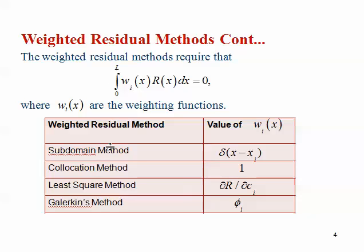The value of the weight function depends on the method used. In the subdomain method, you use the Dirac delta function at x = x_i. In the collocation method, the weight is one at chosen points and zero elsewhere. For the least squares method, the weight is taken as the derivative of the residual. In the Galerkin method, the weight function is the same as the shape function of the residual. I am using the Galerkin method because it is simple to use.